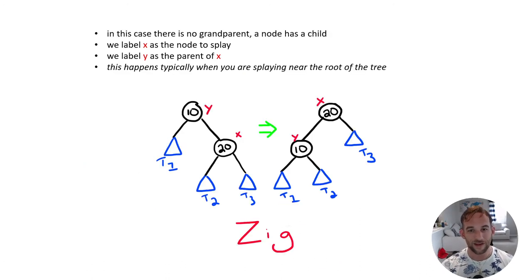In our next case, we have just a zig splay operation. In this instance, there is no grandparent. We basically only have two nodes, x and y. This is typically when we're splaying near the root of the tree.